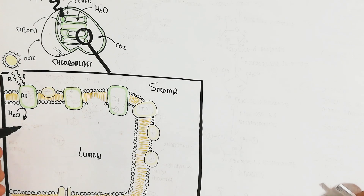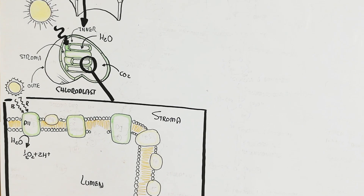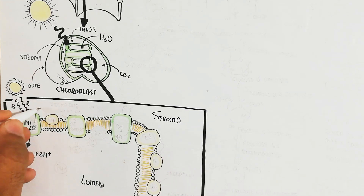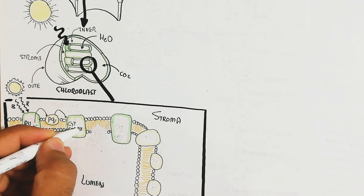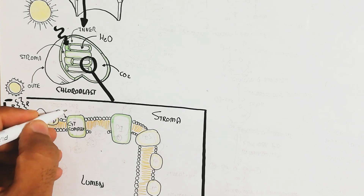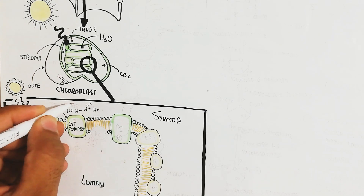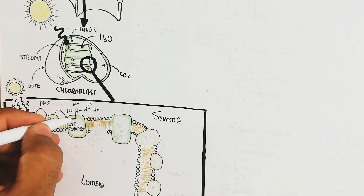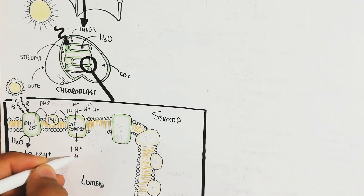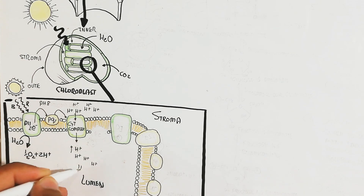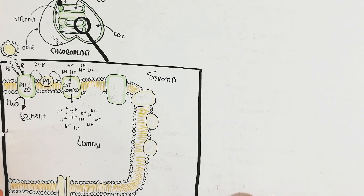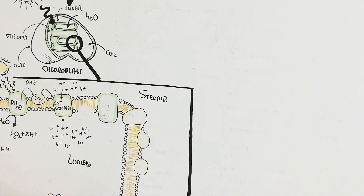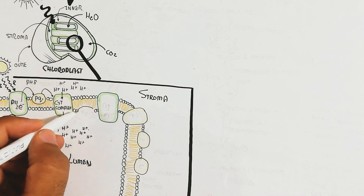Red and blue light fall on Photosystem 2, and the electron will be excited via photolysis — photo-hydrolysis. Water is split into protons, oxygen, and electrons. Oxygen is released into the environment, while the electrons move into plastoquinone, which transfers them to the cytochrome complex protein.